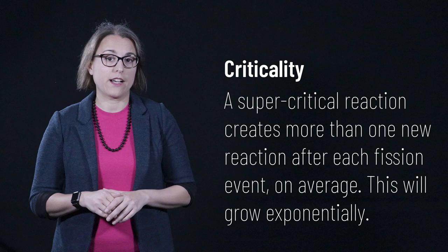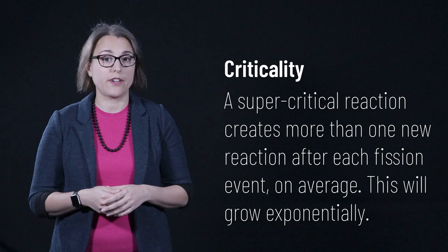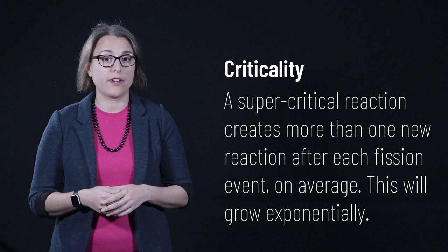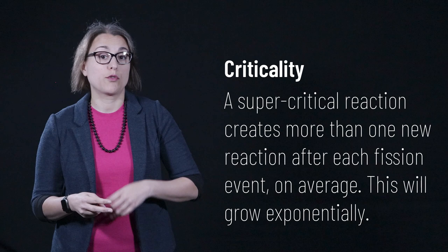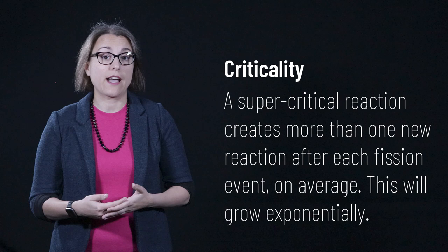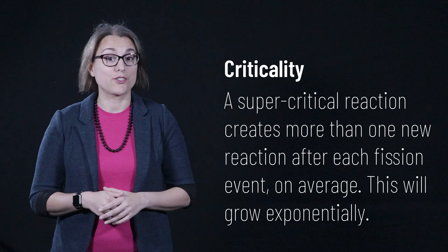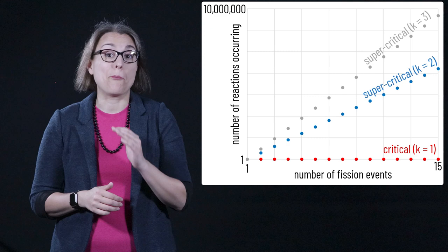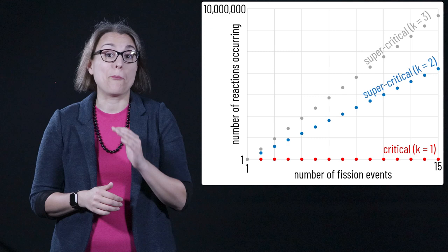In a supercritical reaction, each fission process generates, on average, more than one additional fission event. If one fission event provokes two more, then these two will provoke four, which will provoke eight, and so on. A supercritical reaction grows exponentially. This means the number of fission events becomes extremely large, extremely quickly. If we look at a graph of the number of fission events that occur after each process, we need to use a logarithmic scale in order to even compare critical and supercritical reactions.